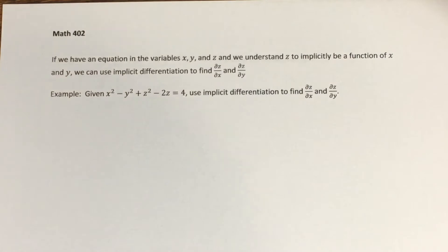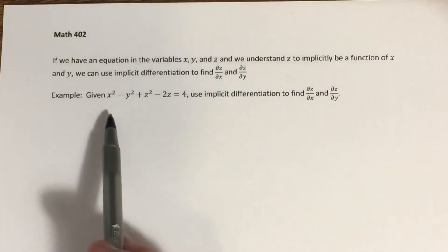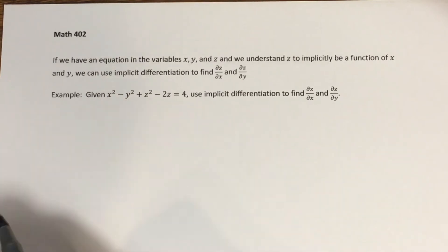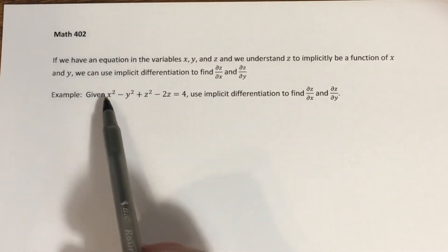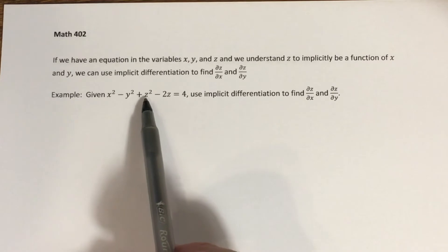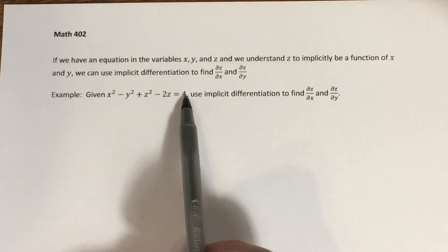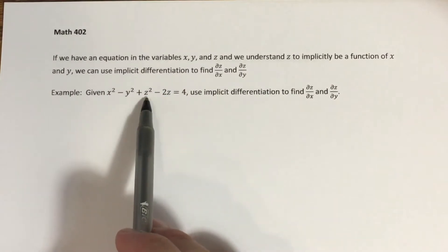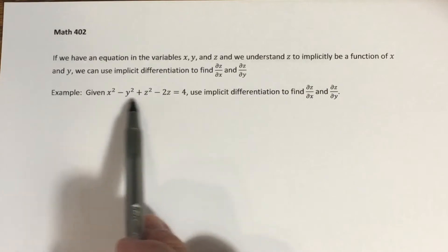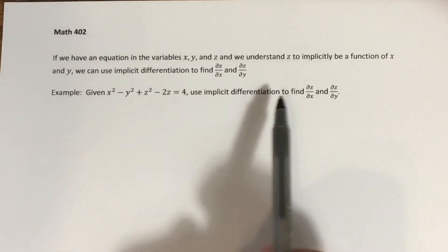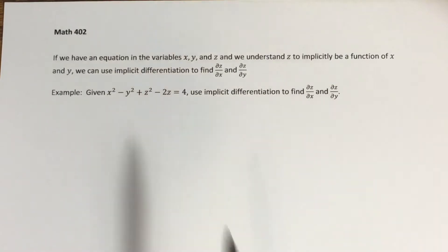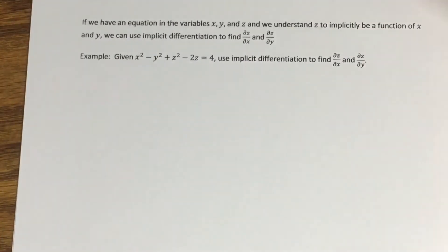Let's go to an example. Suppose z is understood to be a function of x and y, and we have the equation x² - y² + z² - 2z = 4. Here x and y are independent variables, but it's really important to remember z represents a function of x and y. What we want to do is find the partial of z with respect to x and the partial of z with respect to y.